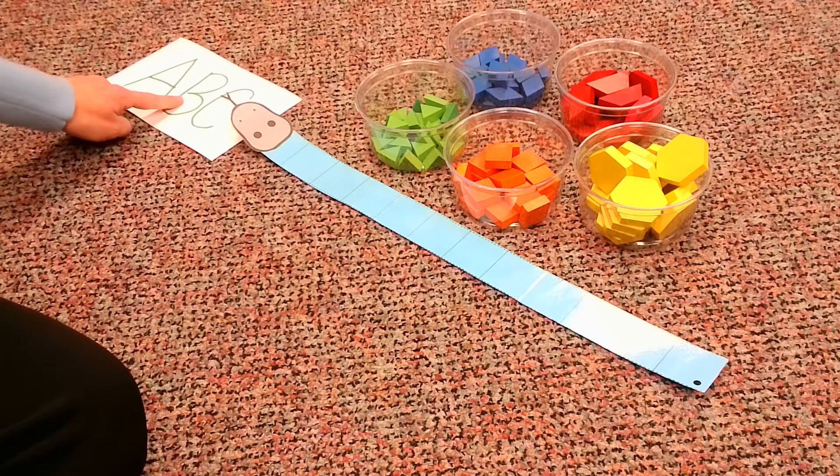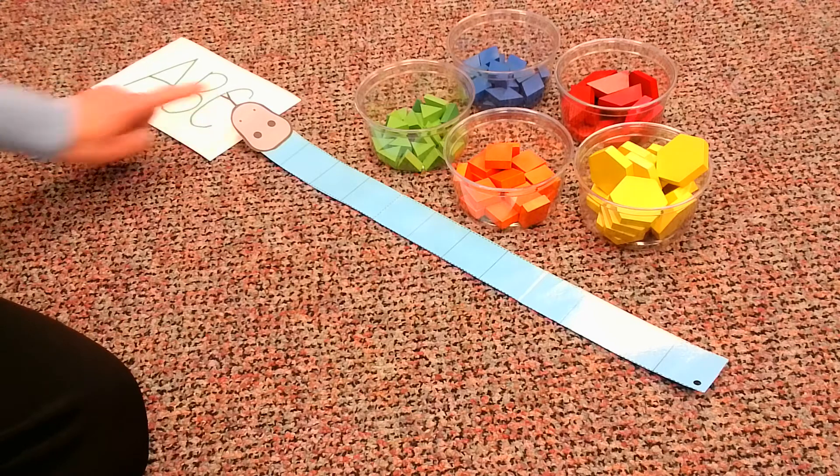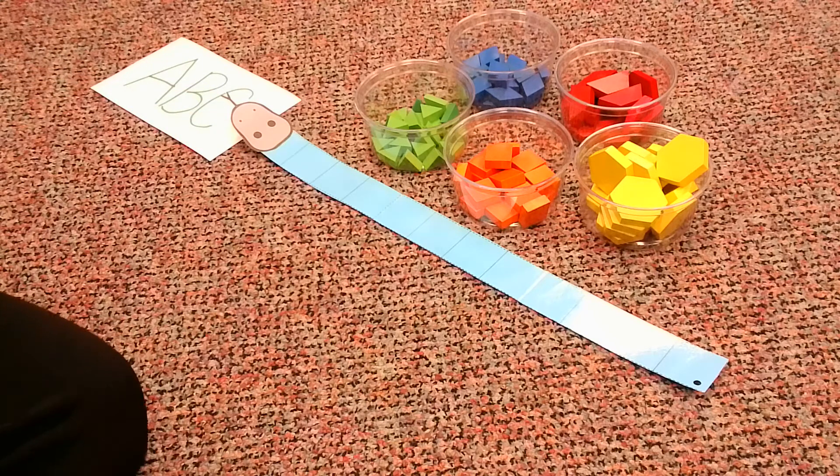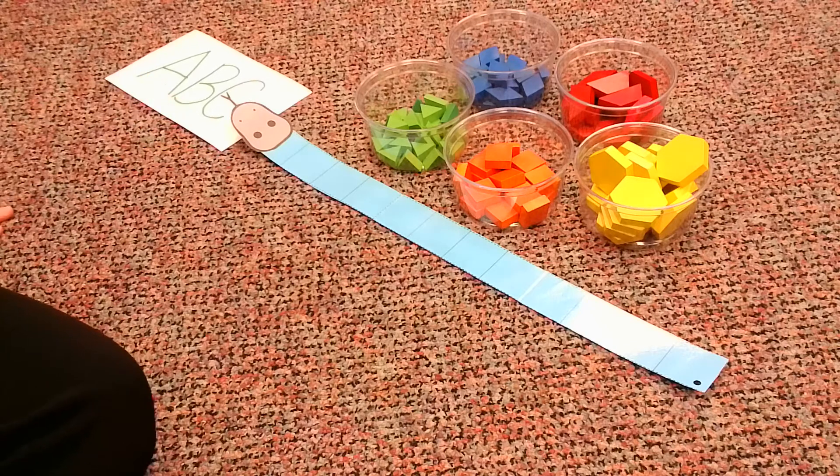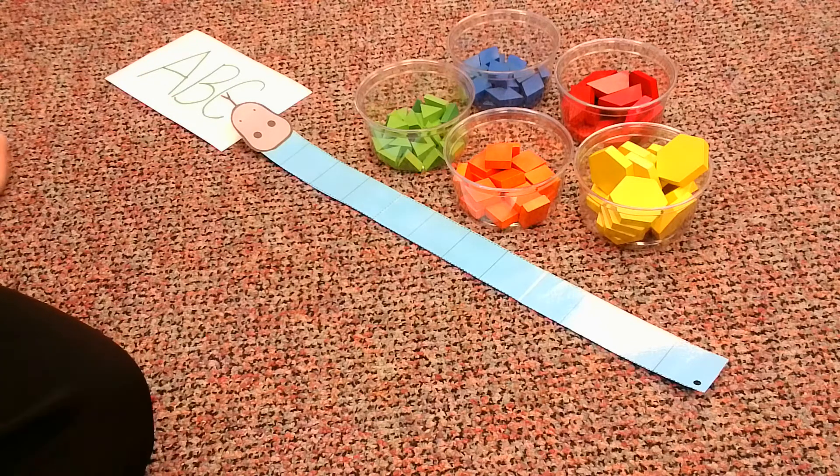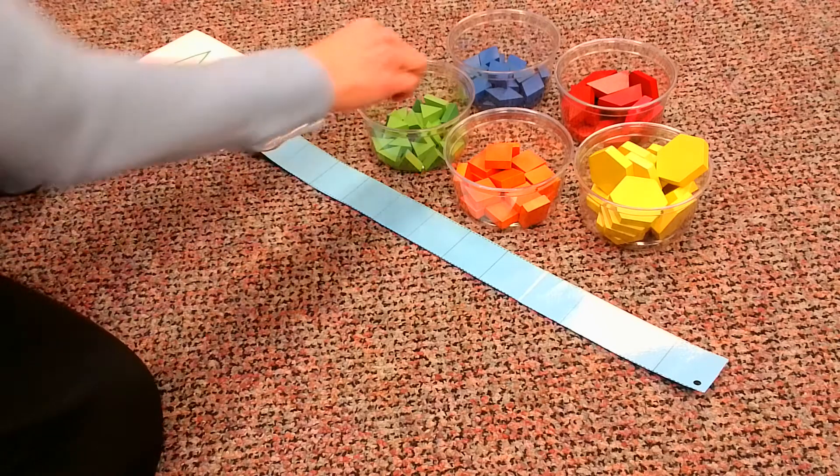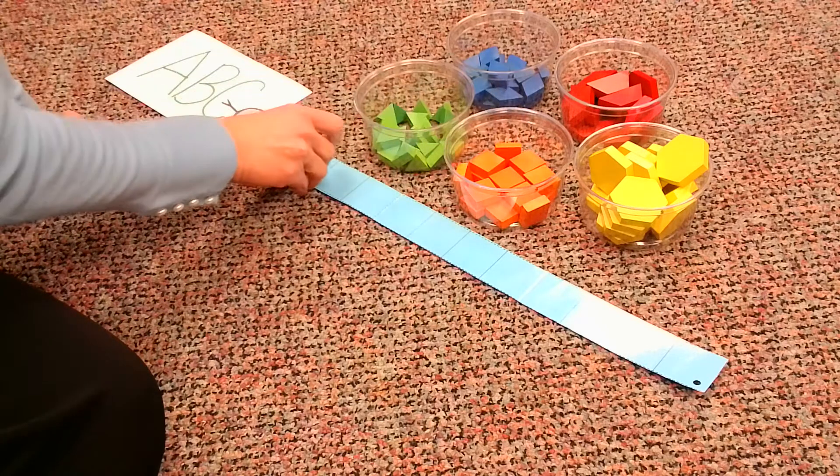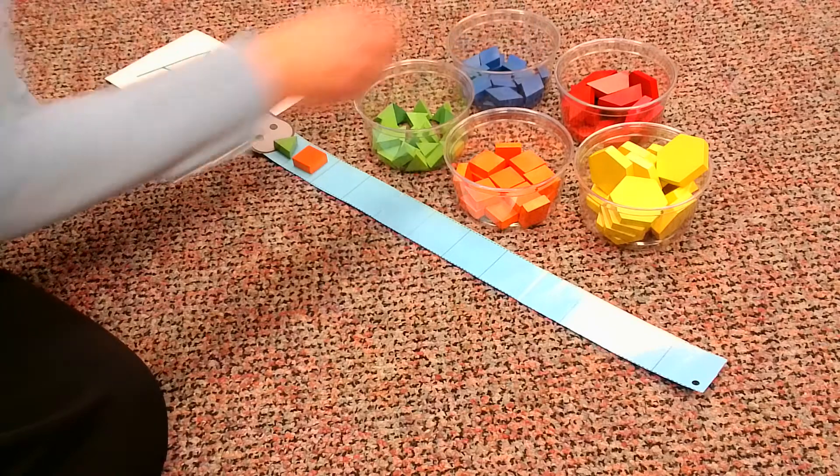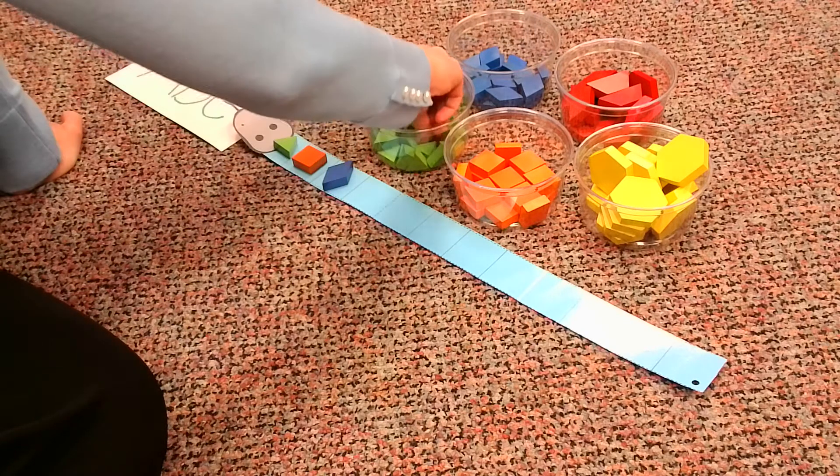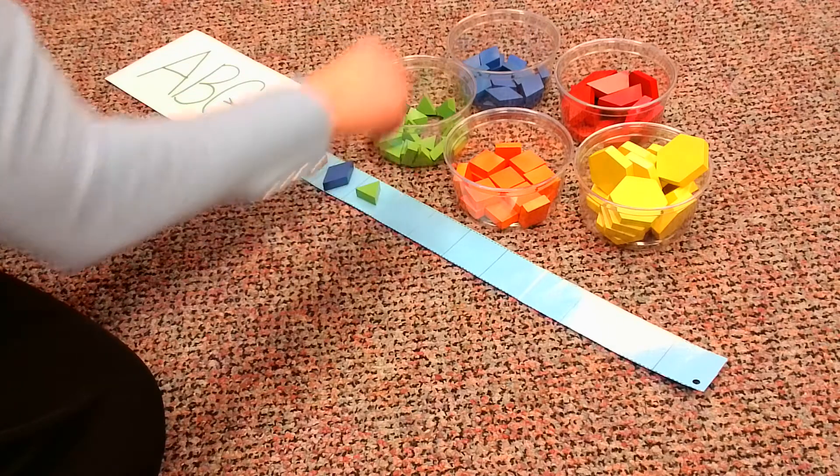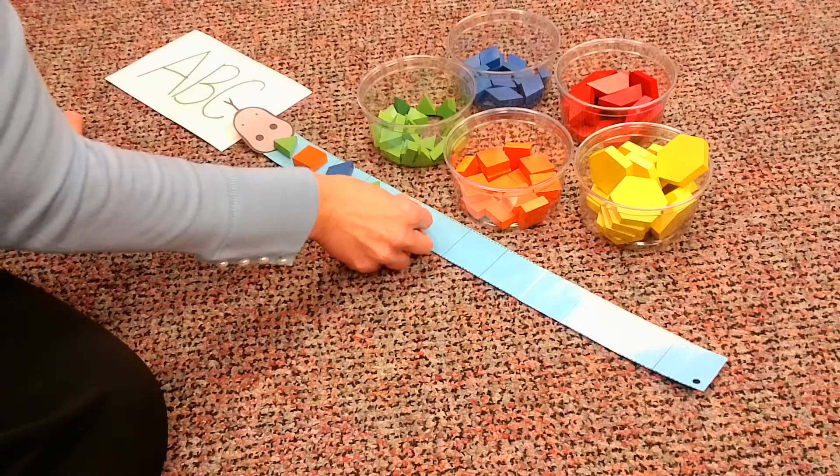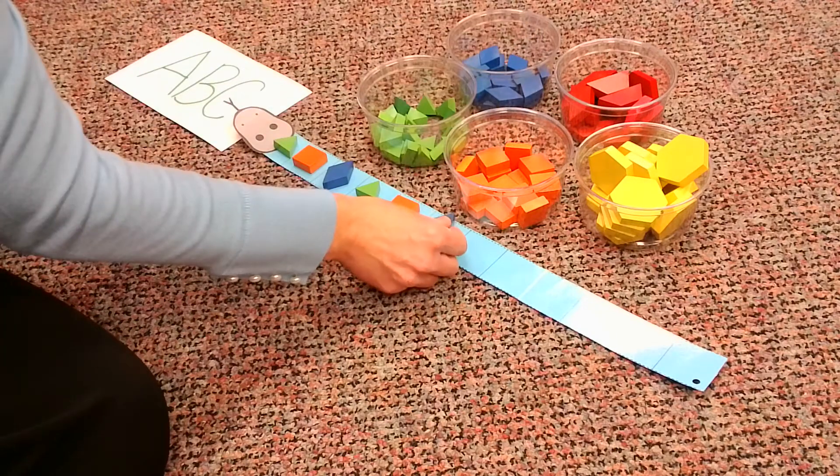One for A, one for B, and one for C. So let's see what we want to do right now. Let's do triangle, square, rhombus. Triangle, square, rhombus.